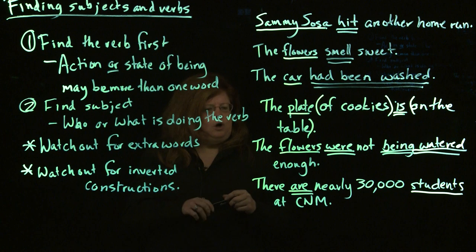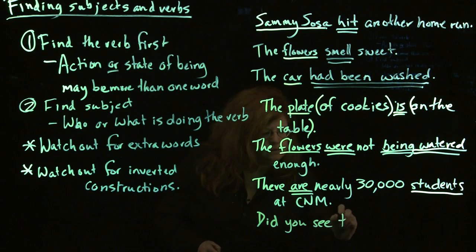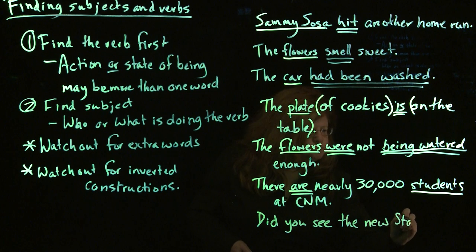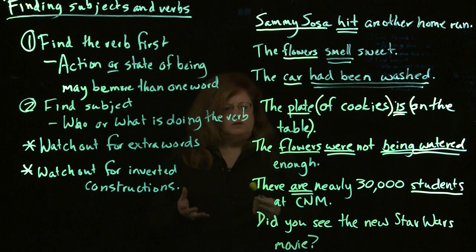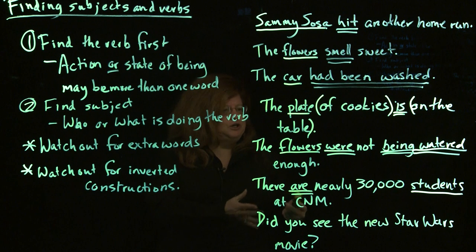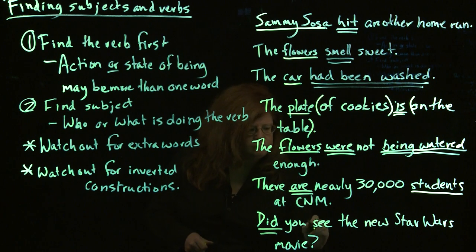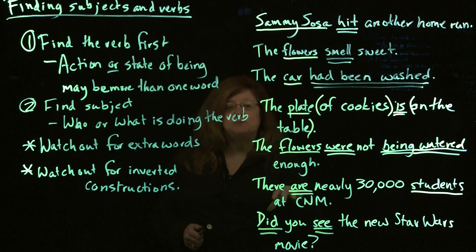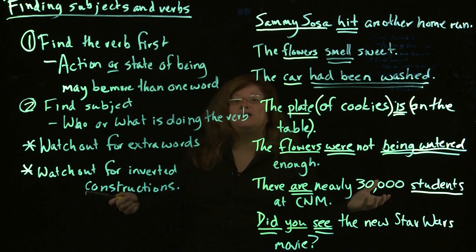Another kind of inverted construction shows up when you ask a question. For example, 'Did you see the new Star Wars movie?' When you have a question, sometimes the verb comes in front of the subject, or just part of the verb comes in front of the subject. We look for our verb: we have the main verb 'see,' but that's not the whole verb — the whole verb is 'did see.' So in this case, we've got something in between the verbs. If we ask who or what did see the new Star Wars movie, it's 'you.' The subject is in the middle of the verb.